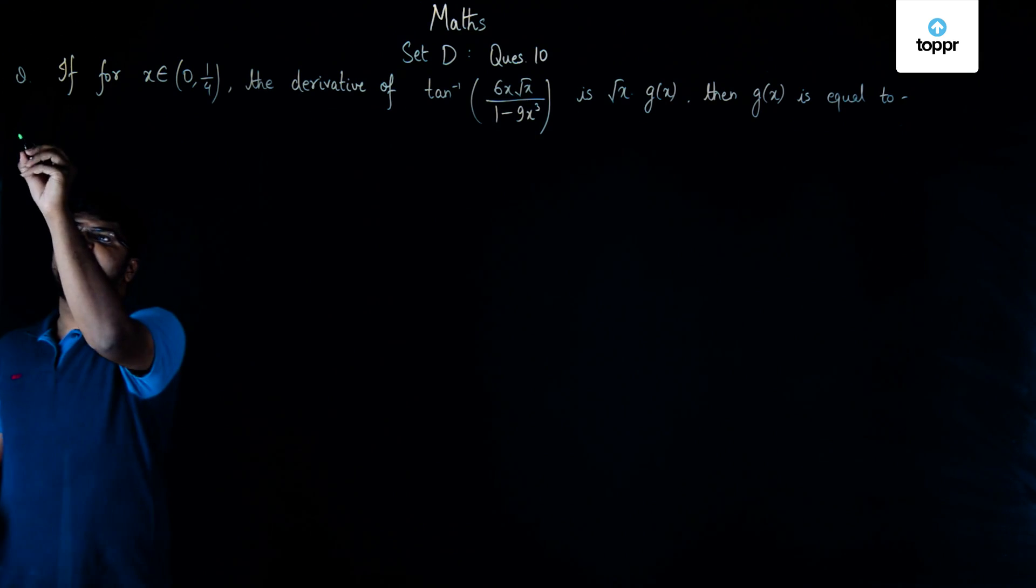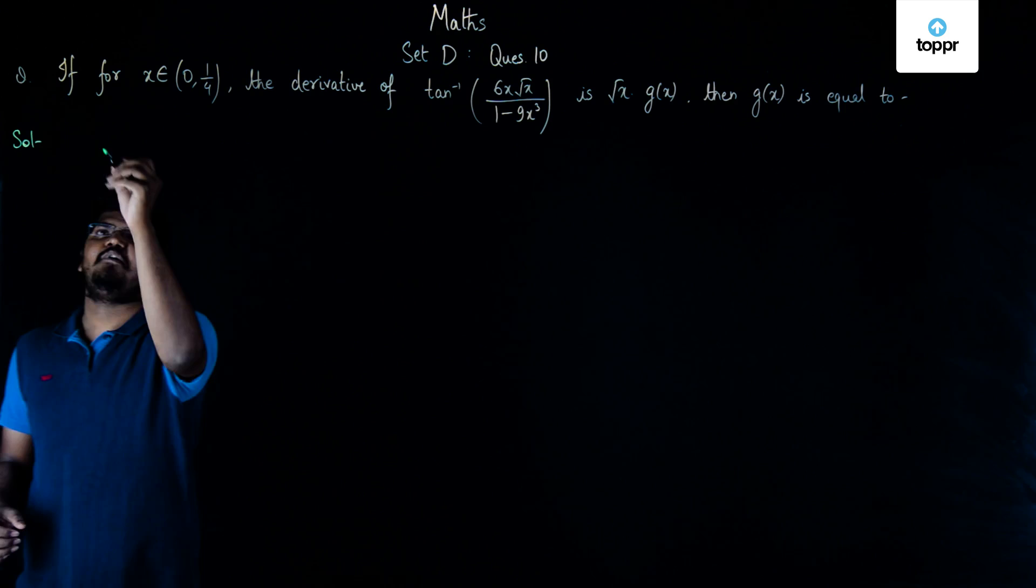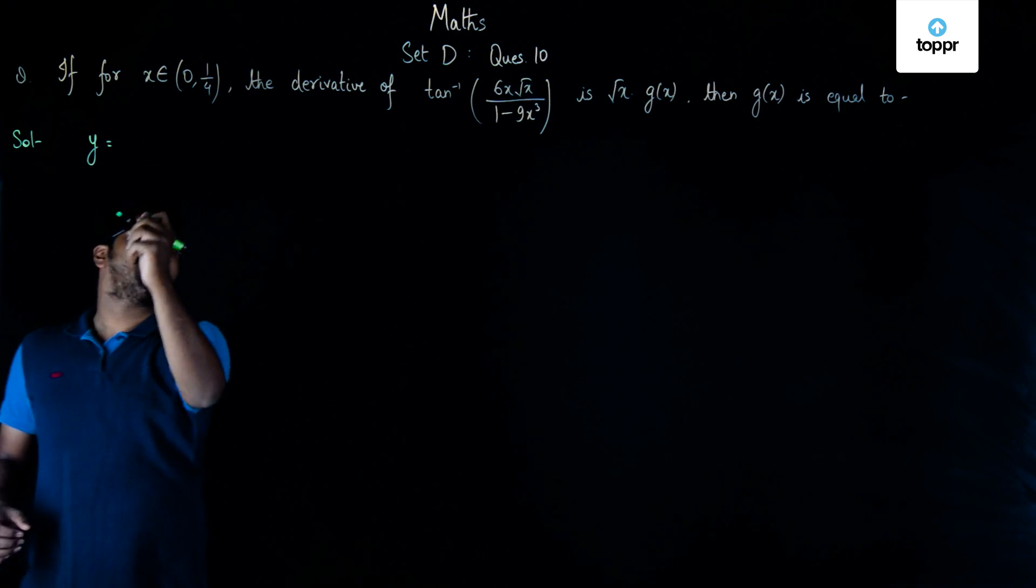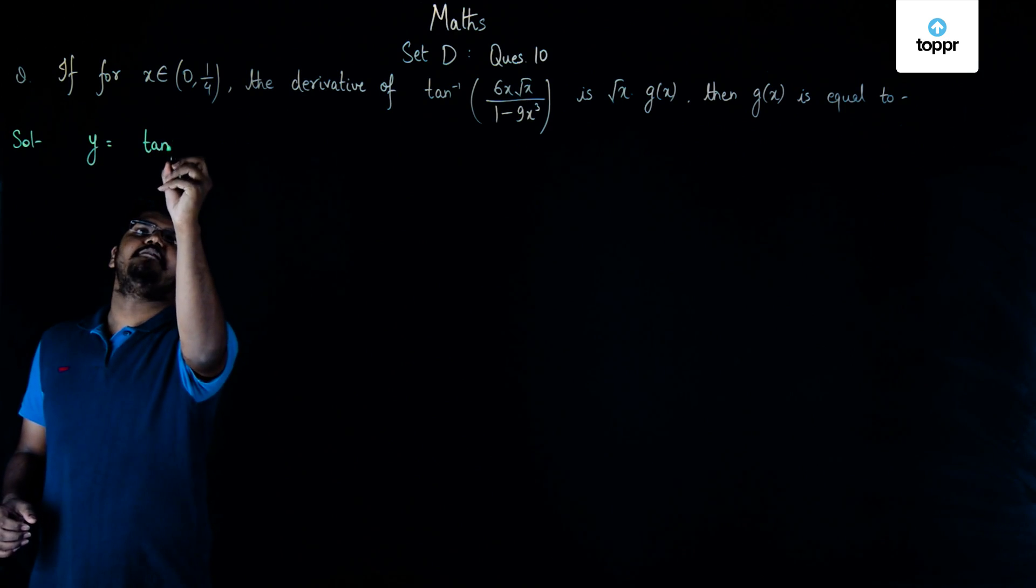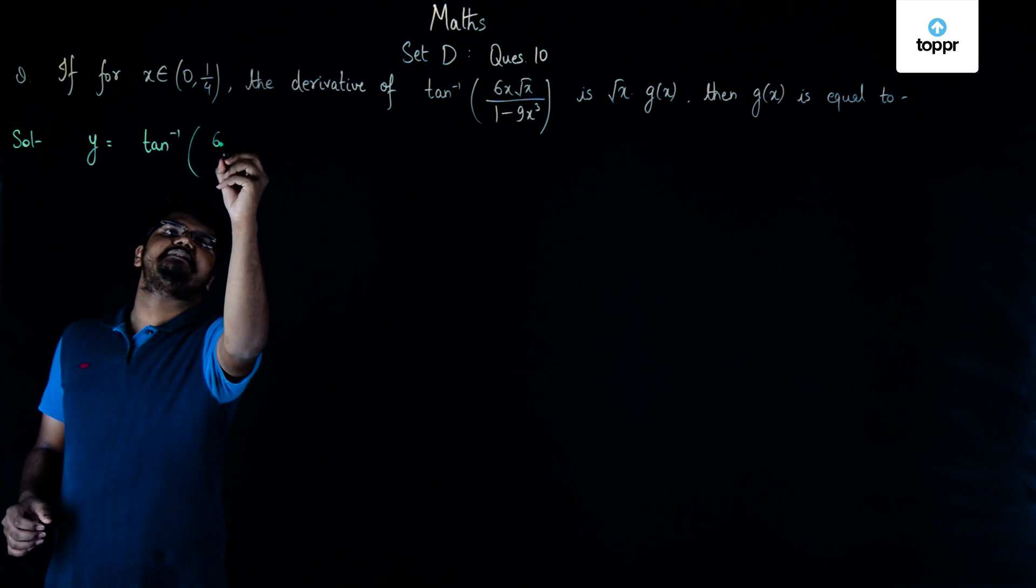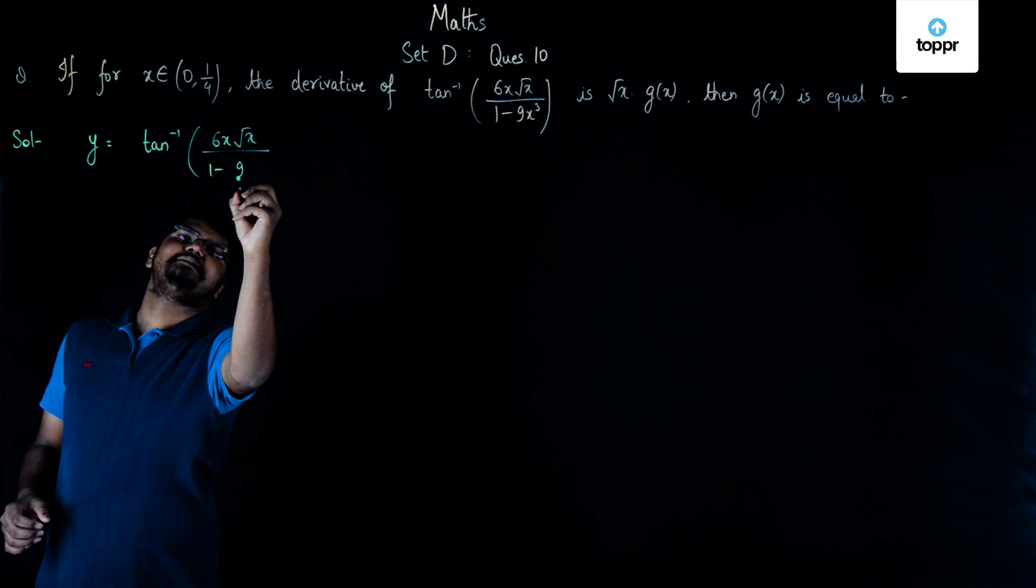So let's consider the function given in the question as y. We can say that y is given to us as tan inverse (6x√x)/(1 - 9x³).